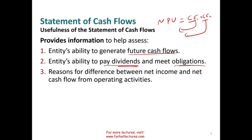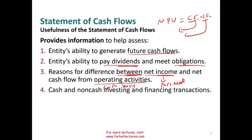Also, it gives us the difference between net income, which is accrual net income, and cash flow from operating activity, which is net income on a cash basis. So basically you're going from net income on an accrual basis to net income on a cash basis. Also, on the cash flow statement, they're going to show you cash and non-cash investing and financing transactions.